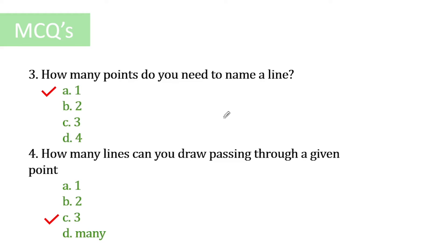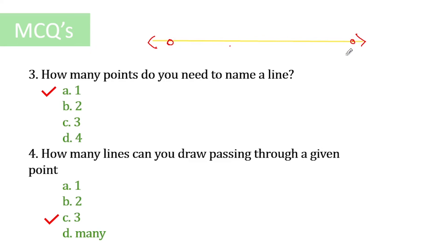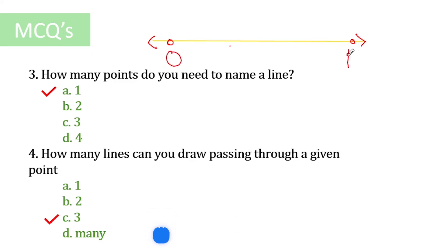The next question: how many points do you need to name a line? If we draw a line with arrows at both ends to show it goes on forever, we need a minimum of two points to name it. Let's name them O and P — so we call it line OP. The answer is two points to name a line.